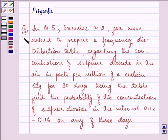Hi and how are you all today? The question says in question 5 exercise 14.2 you were asked to prepare a frequency distribution table regarding the concentration of sulfur dioxide in the air in parts per million of a certain city for 30 days.